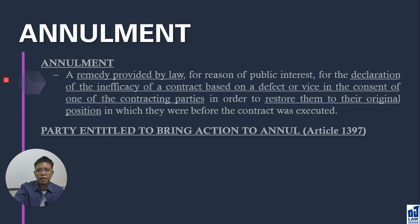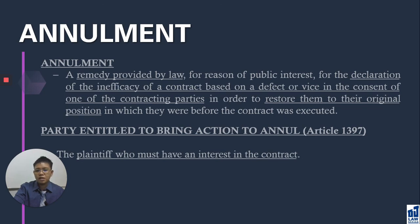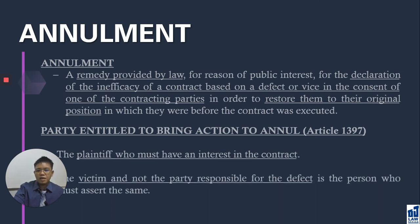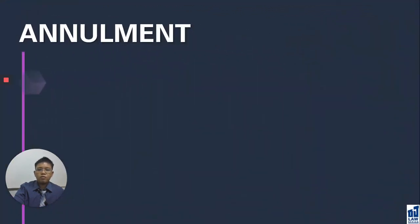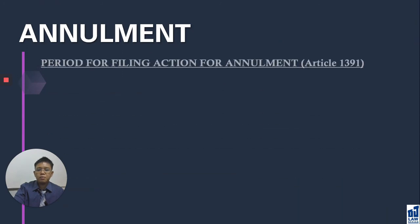Parties entitled to bring an action for annulment: the injured party, who is the person interested in the contract or the victim — in case of vitiation of consent. What else you have to remember about annulment is the prescriptive periods for filing an action for annulment.